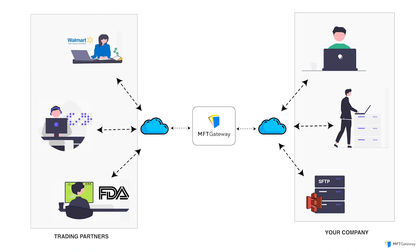When an incoming file is received by the MFT Gateway, you can access these files through the web console, configure webhooks to invoke your endpoints upon message receipt, or synchronize files with your internal systems using SFTP or S3. Similarly, when you need to send messages in return, you can utilize REST APIs or upload individual files, and the MFT Gateway will transmit these messages to your partners using the AS2 protocol.